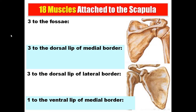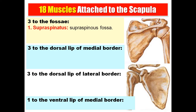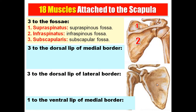There are 18 muscles attached to the scapula. Three muscles attach to the fossae: supraspinatus to the supraspinous fossa, infraspinatus to the infraspinous fossa, and subscapularis to the subscapular fossa.